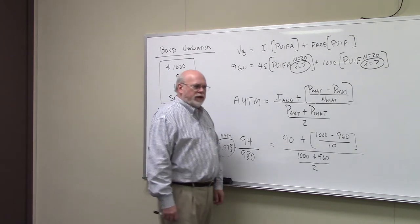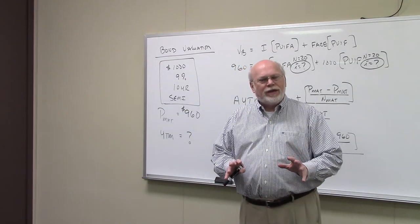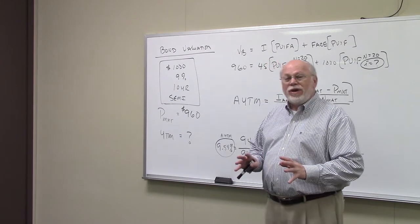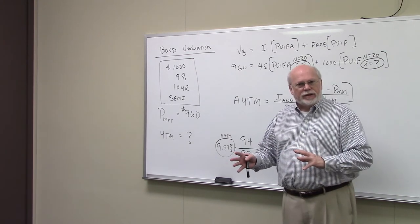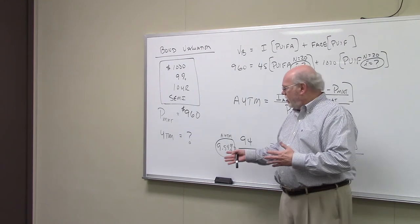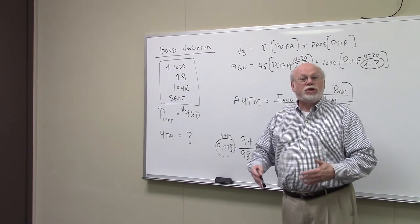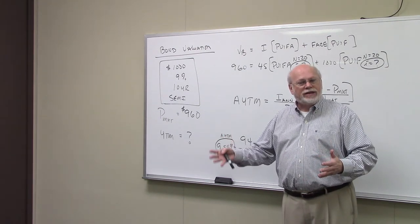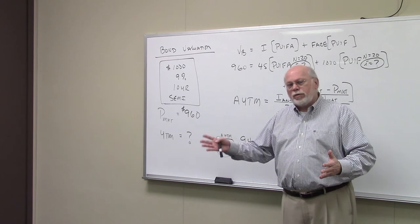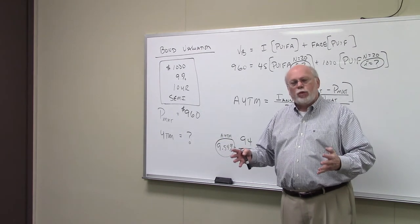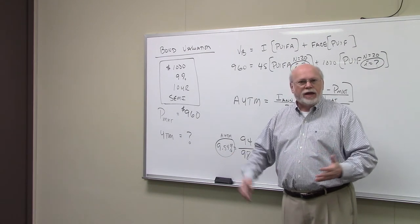At this point in the process — and we're not through finding the yield on this bond — because our approximate yield to maturity is 9.59%, we think the actual yield on this bond is somewhere between 9% and 10%. We're going to interpolate to find the exact yield on this bond. In a previous video I showed you how to interpolate — we're going to do that again, but applied to bond yields, and that will be covered in the next video.